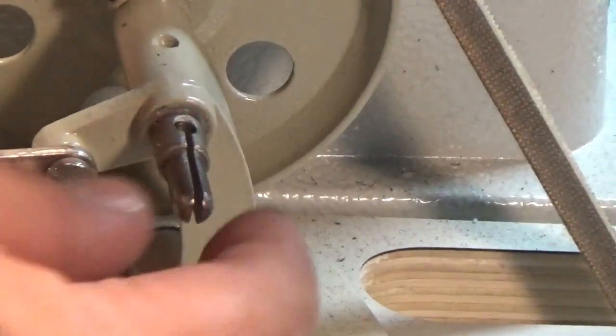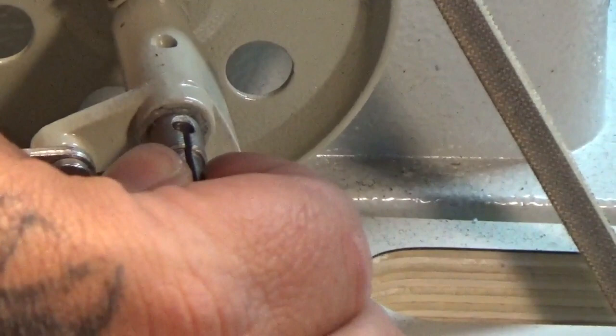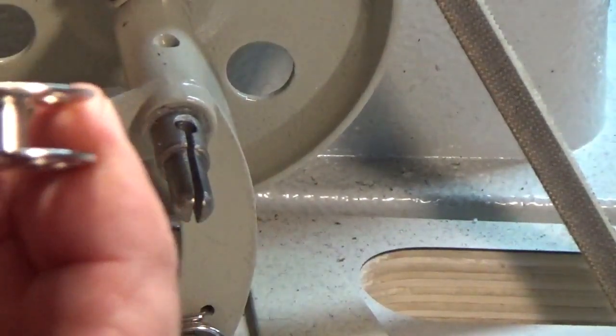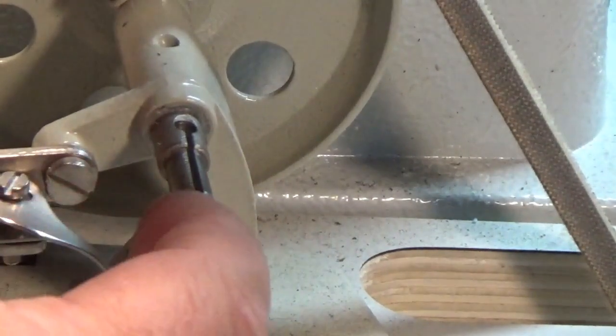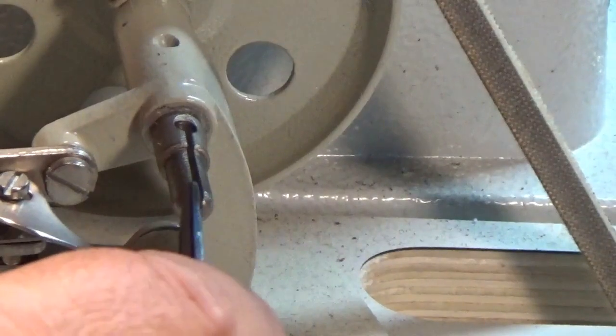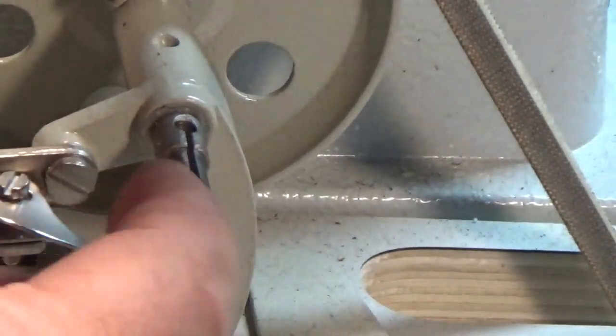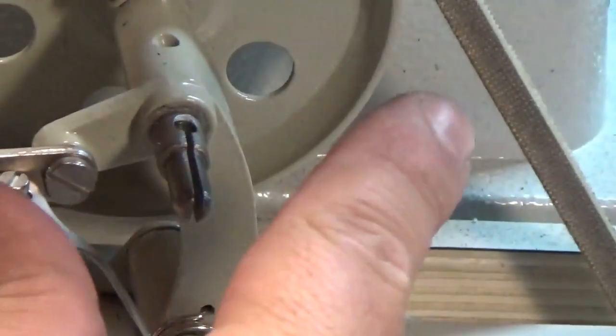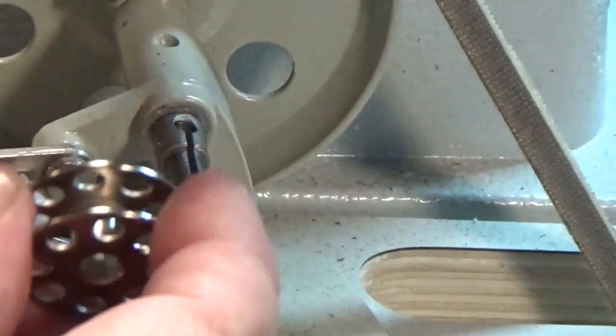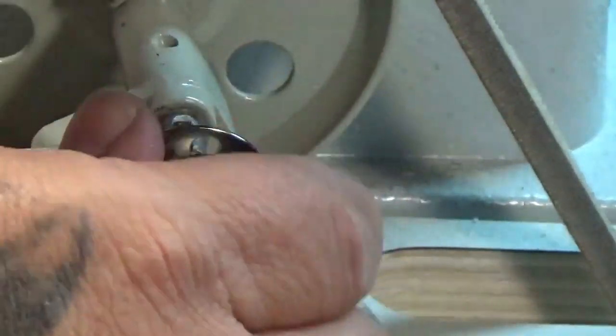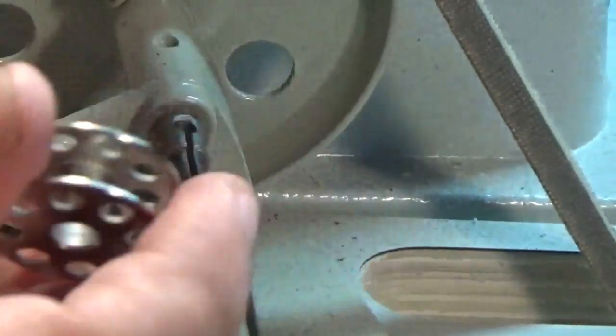This right here either gets bent in so it's not pressing up against your bobbin. What you can do is grab a screwdriver or something to pry this out a little where it's got this gap. It'll pry out your stem so it'll fit more snug on here, and it'll get traction to wind your bobbin better.